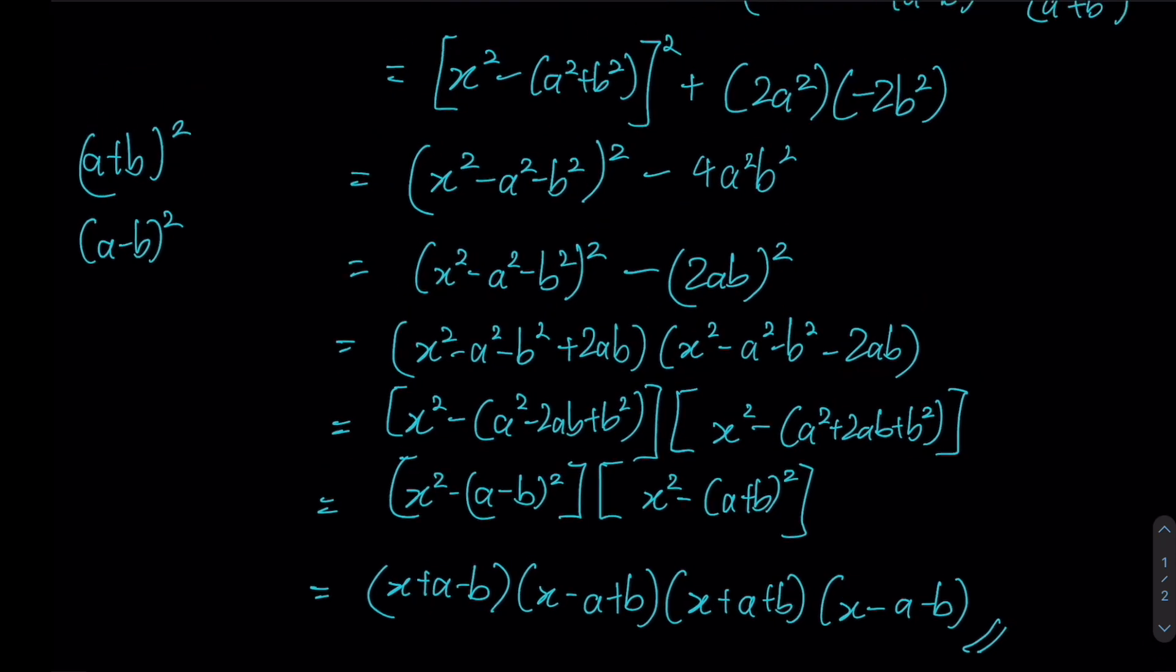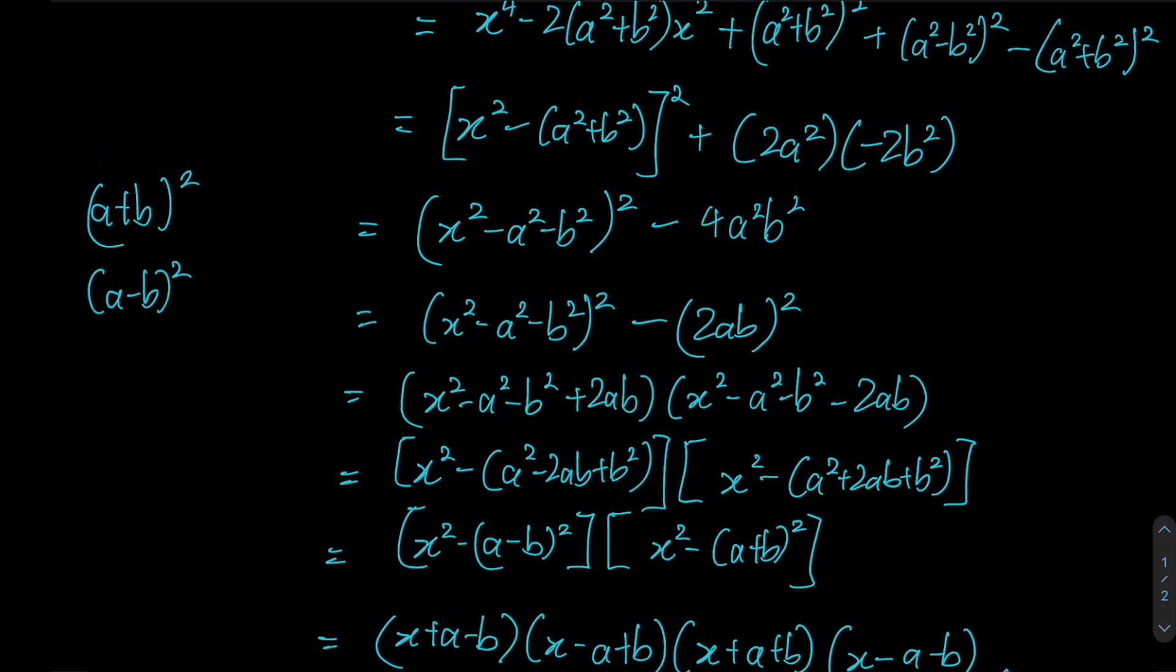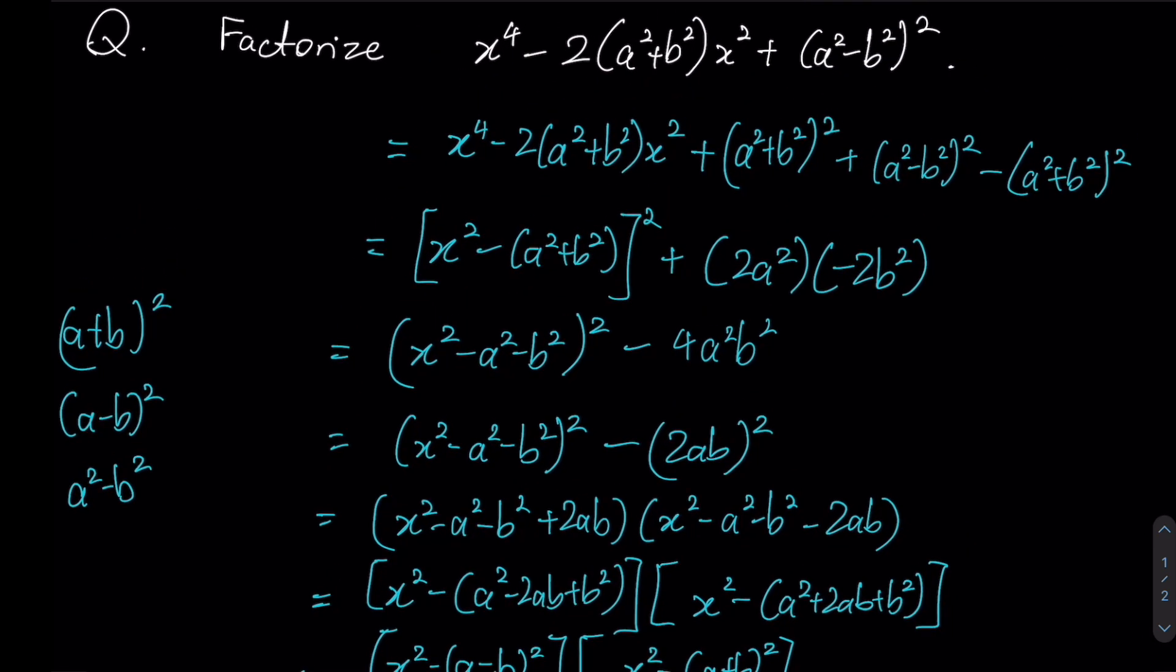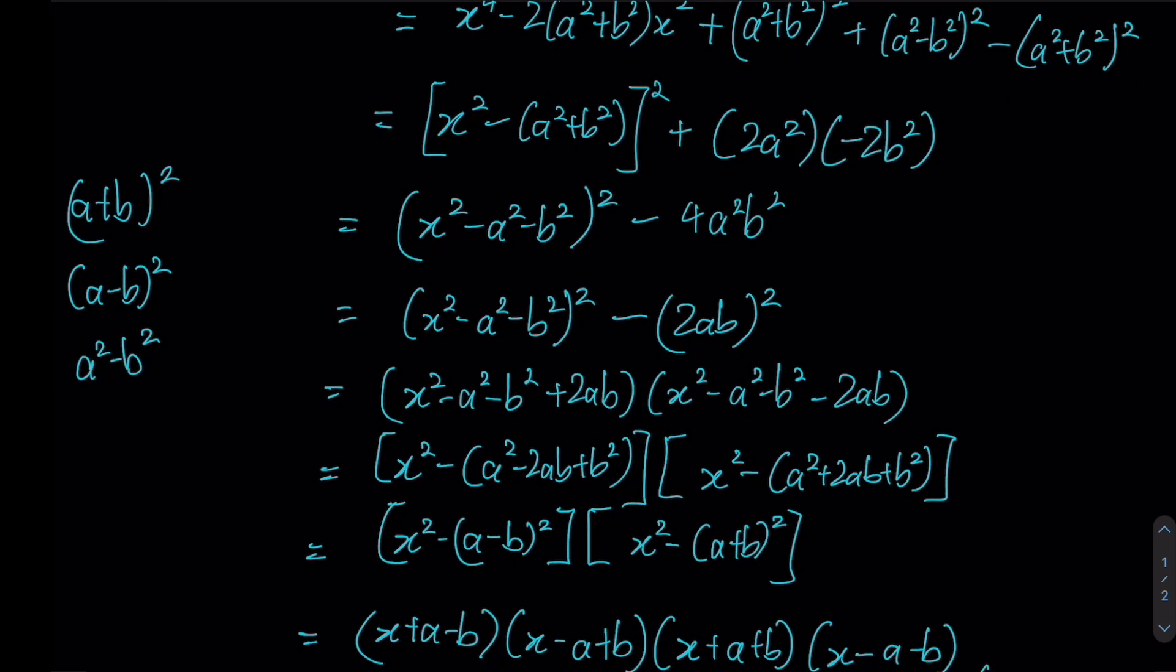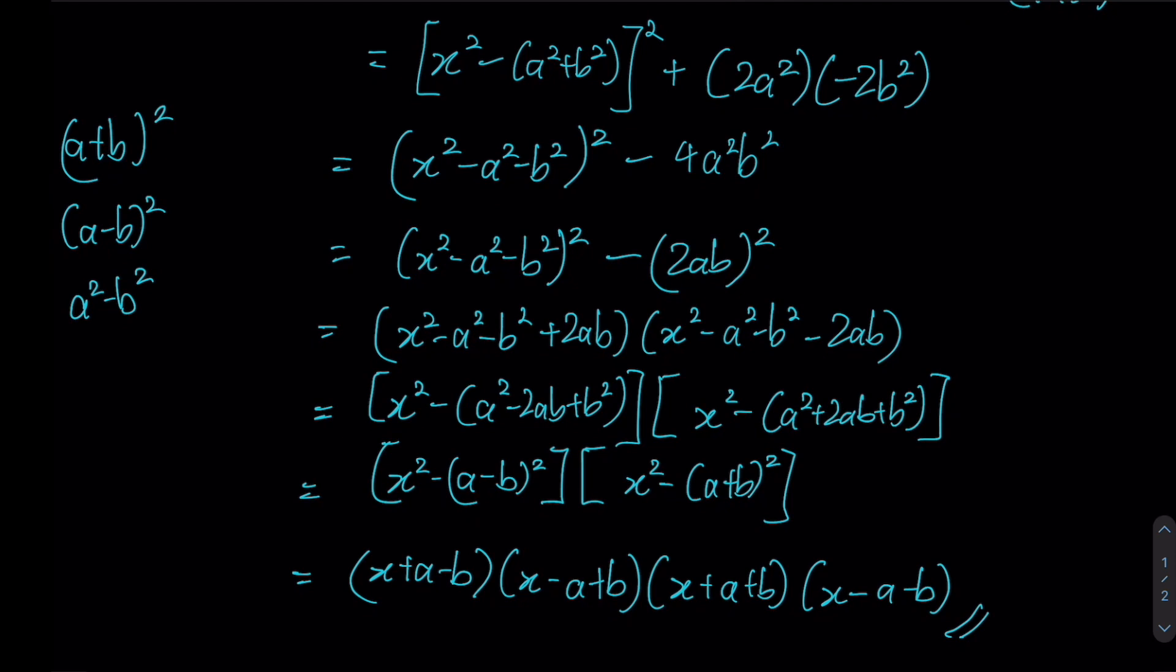So just to sum up, we are making use of all three identities over here, with difference of squares being the main one. Completing the square is also very key so that we are able to achieve this form over here, which we can then factorize into this form. And of course, we just need to notice at which stages is it okay for us to apply the difference of squares.